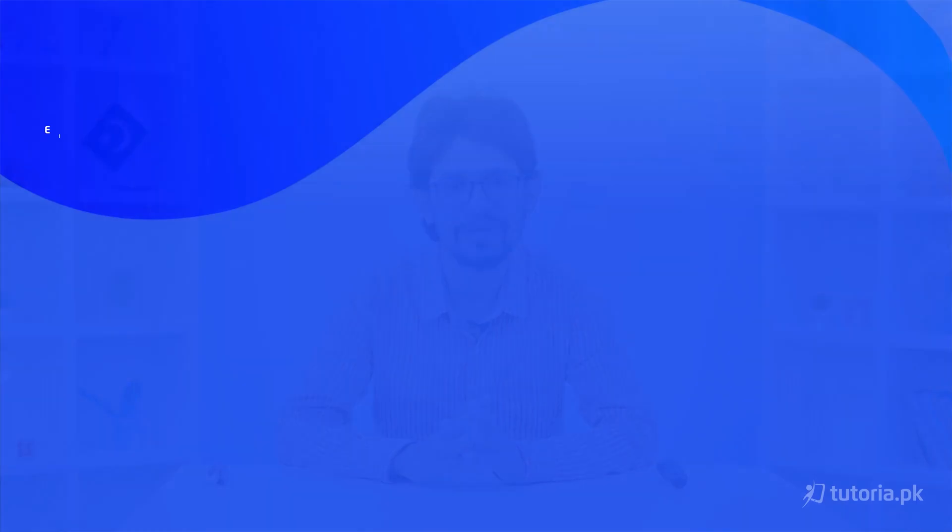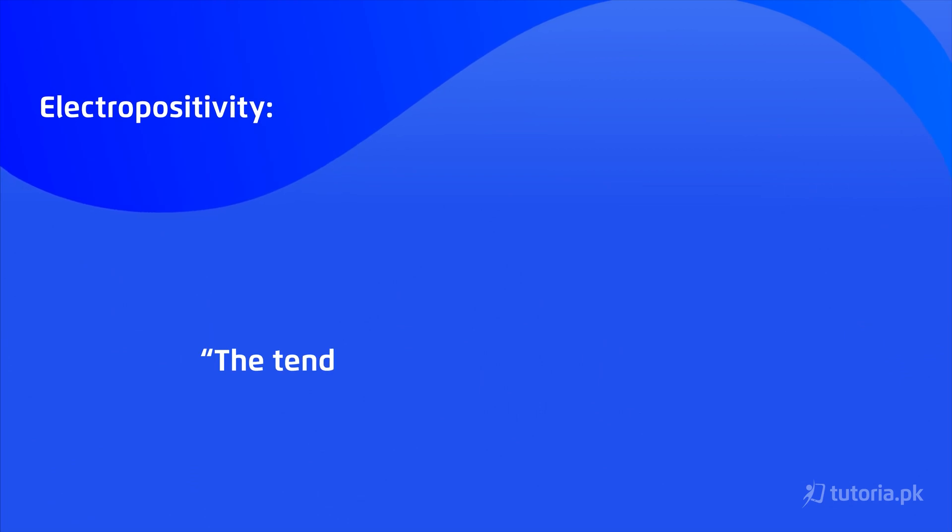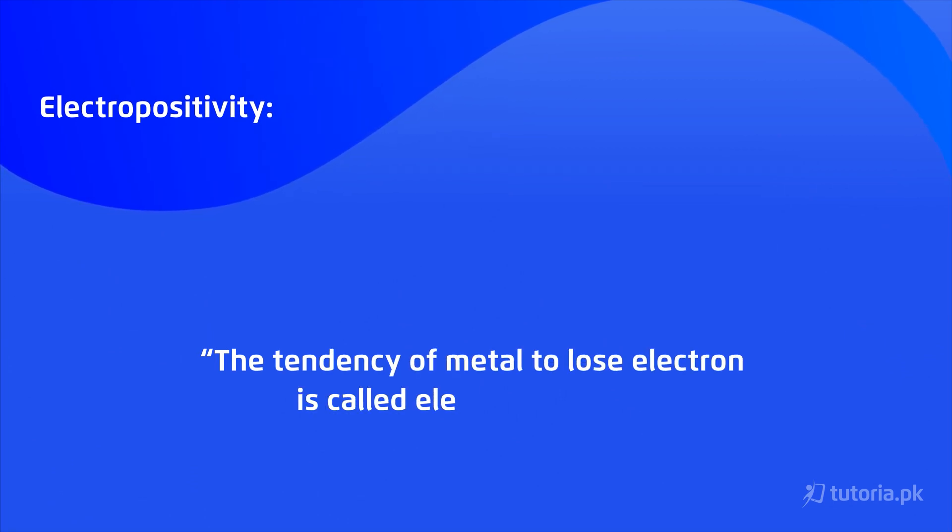Malleability means that metals can be converted into sheets, and ductility means that metals can be converted into wires. Now let's study electro-positive character. Electro-positive character means that metals tend to lose electrons, i.e., metals lose electrons.